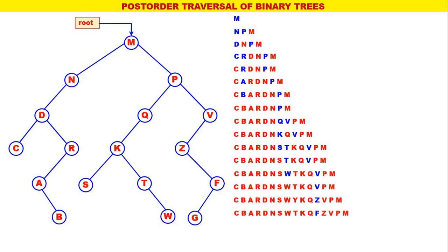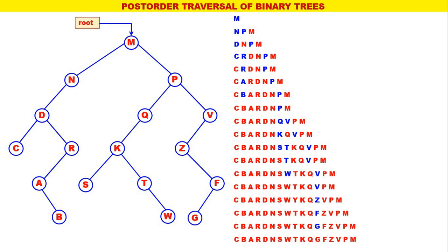Next, the leftmost is F. The post-order for F is G, F — with F processed. Therefore, F is replaced by G, F with F processed. Now the leftmost is G. The post-order for G is G only, with G processed. Now all the nodes have become red — we have traversed all the nodes.